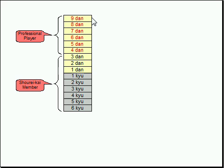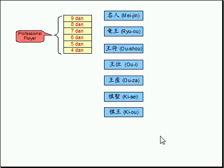Alright, now let's see what professional players do. What they do is basically, they fight for these 7 major titles. There are other titles as well, but these 7 are the major ones.